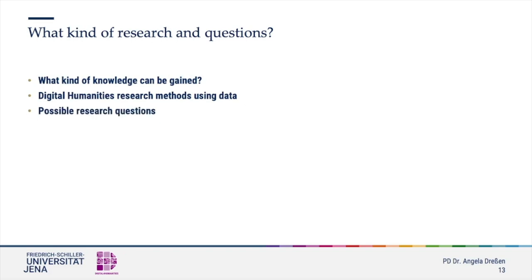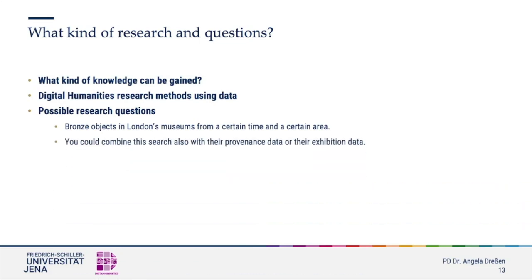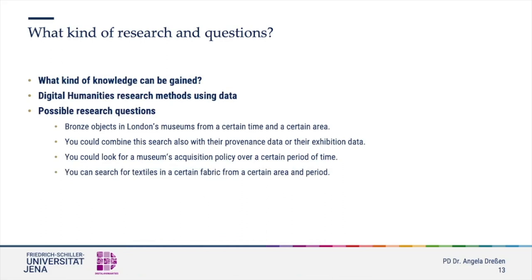Research questions like this can be manifold. You can think either very broad or very specific. For instance, you might want to search for bronze objects in London's museums from a certain time and area. You could combine the search with provenance data and exhibition data to then compare it with the situation in Paris in a certain range of years. You could look for a museum's acquisition policy over a certain period of time, or search for textiles in a certain fabric from a specific area and period, and then refine your search for your very precise research topic.